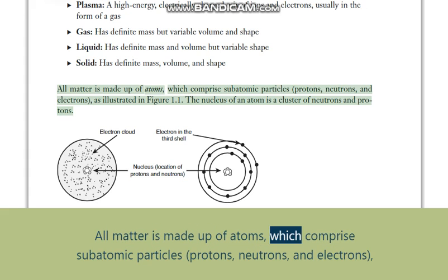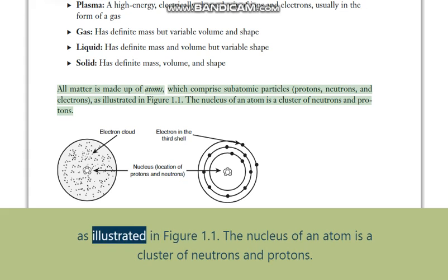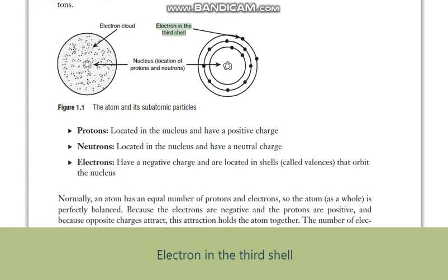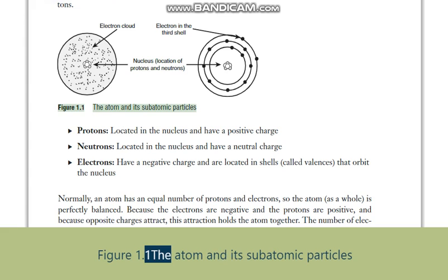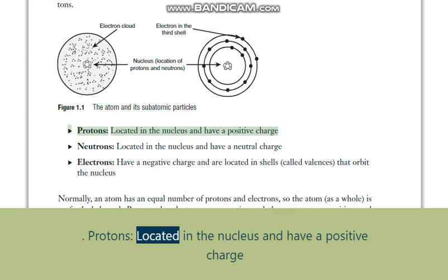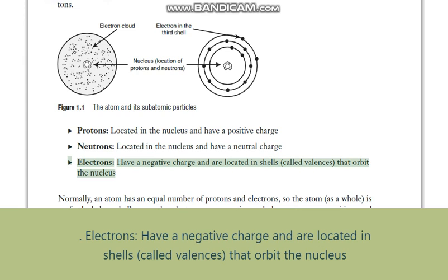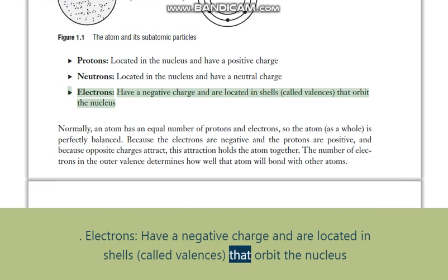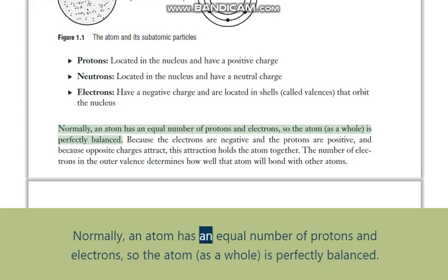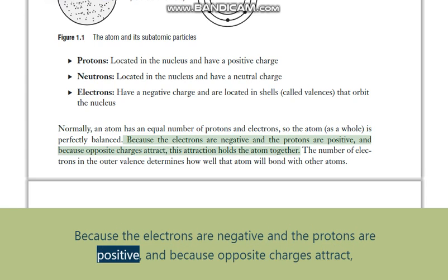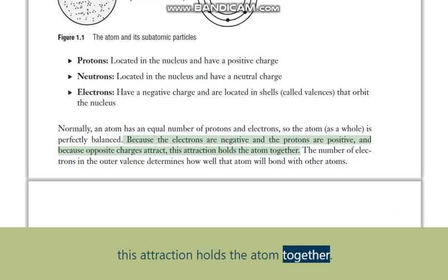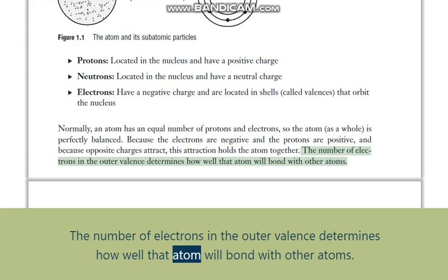All matter is made up of atoms, which comprise subatomic particles — protons, neutrons, and electrons — as illustrated in figure 1.1. The nucleus of an atom is a cluster of neutrons and protons, surrounded by an electron cloud with electrons in shells. Protons are located in the nucleus and have a positive charge. Neutrons are located in the nucleus and have a neutral charge. Electrons have a negative charge and are located in shells called valences that orbit the nucleus. Normally, an atom has an equal number of protons and electrons, so the atom as a whole is perfectly balanced. Because electrons are negative and protons are positive, and because opposite charges attract, this attraction holds the atom together. The number of electrons in the outer valence determines how well that atom will bond with other atoms.